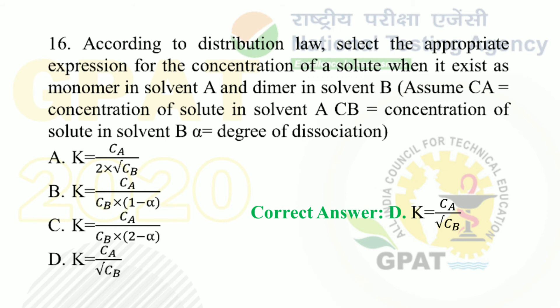Question number 16: according to distribution law, select the appropriate expression for the concentration of solute when it exists as monomer in solvent A and dimer in solvent B. Assume ca equals concentration of solute in solvent A, cb equals concentration in solvent B, and alpha equals degree of dissociation. Option A: k = ca / (2 × √cb). Option B: k = ca/cb × (1 − alpha). Option C: k = ca / (cb × (2 − alpha)). Option D: k = ca / √cb. The right answer is option D — k equals ca upon square root of cb.